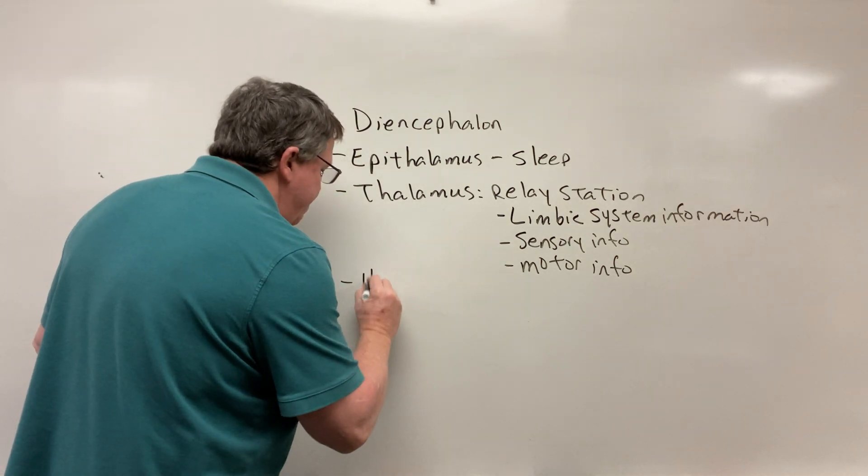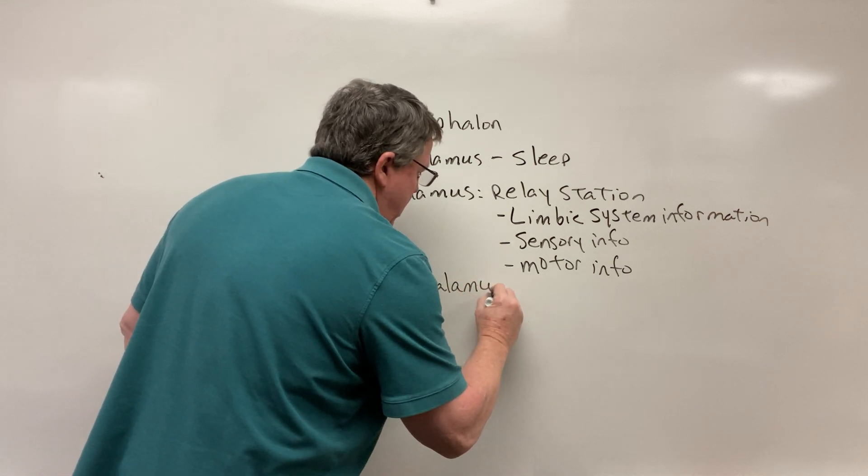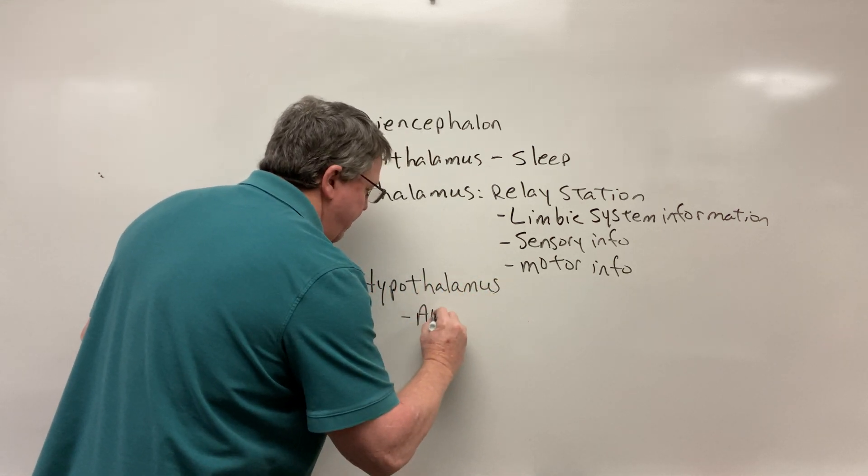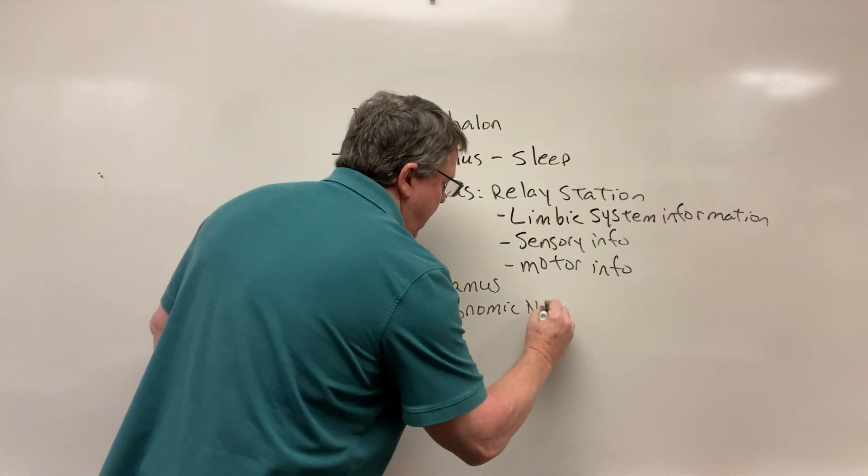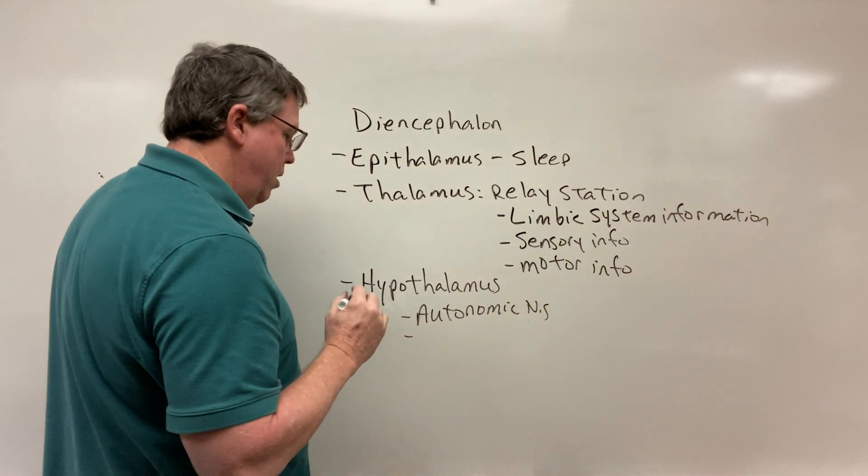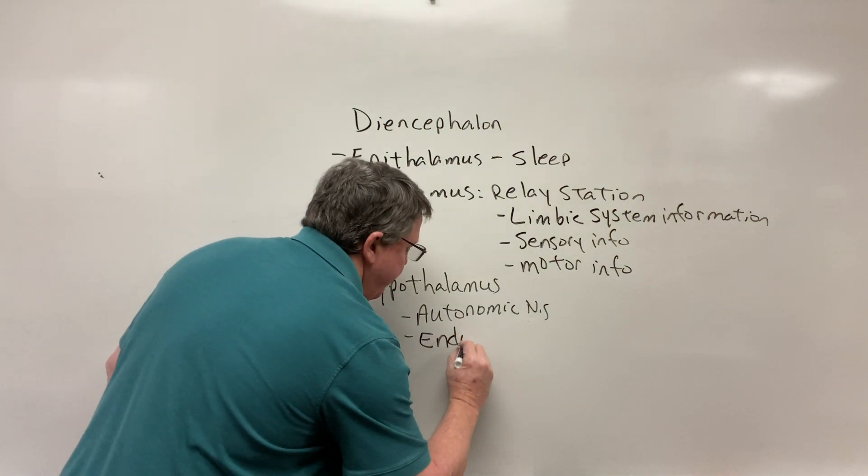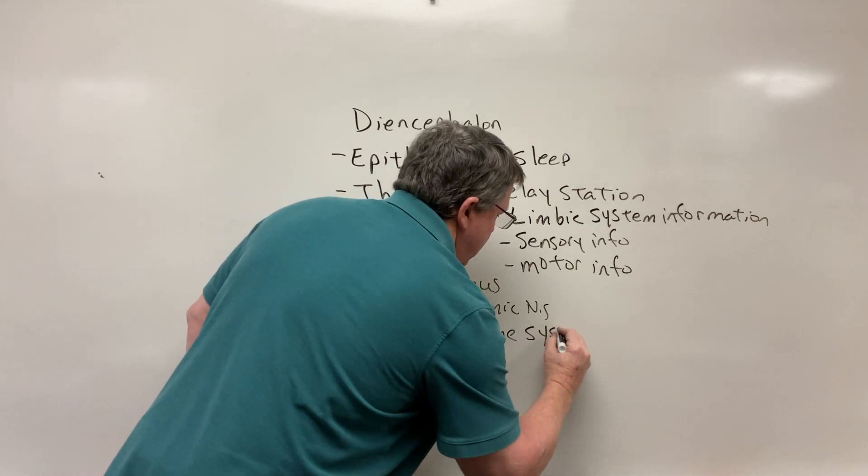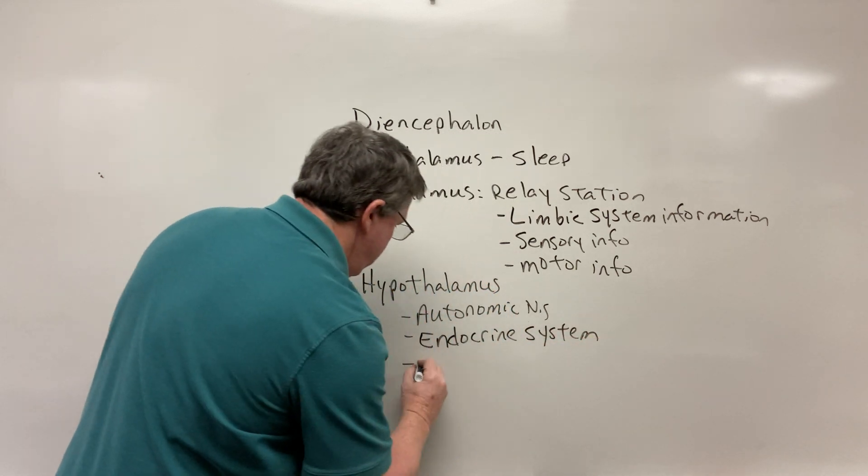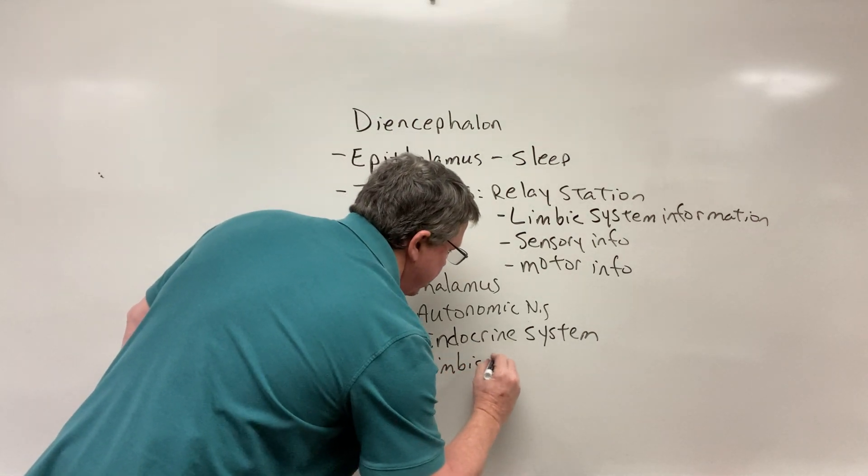Then we have the hypothalamus. The hypothalamus is responsible for your autonomic nervous system. It also plays a role in the endocrine system and in the limbic system, which is your emotions.